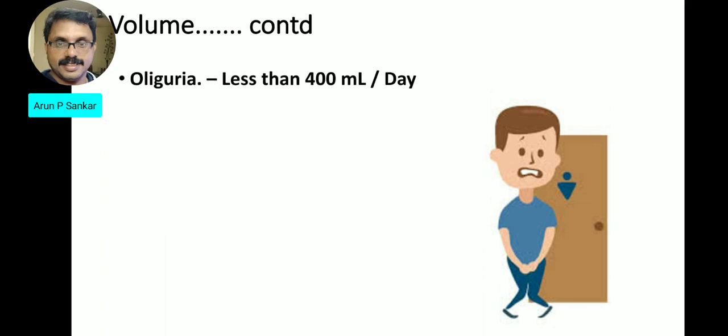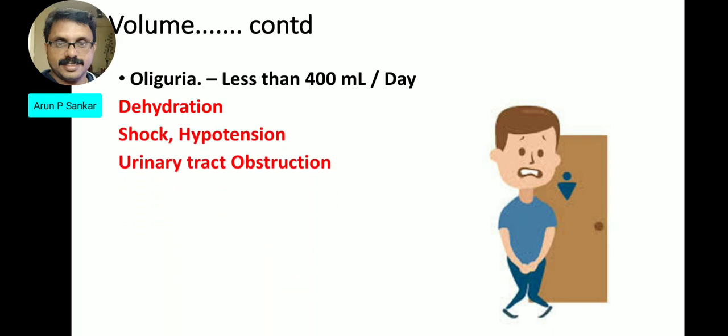Oliguria is defined as less than 400 ml per day urine output. Causes of oliguria include shock, hypotension, urinary tract obstruction, and dehydration.